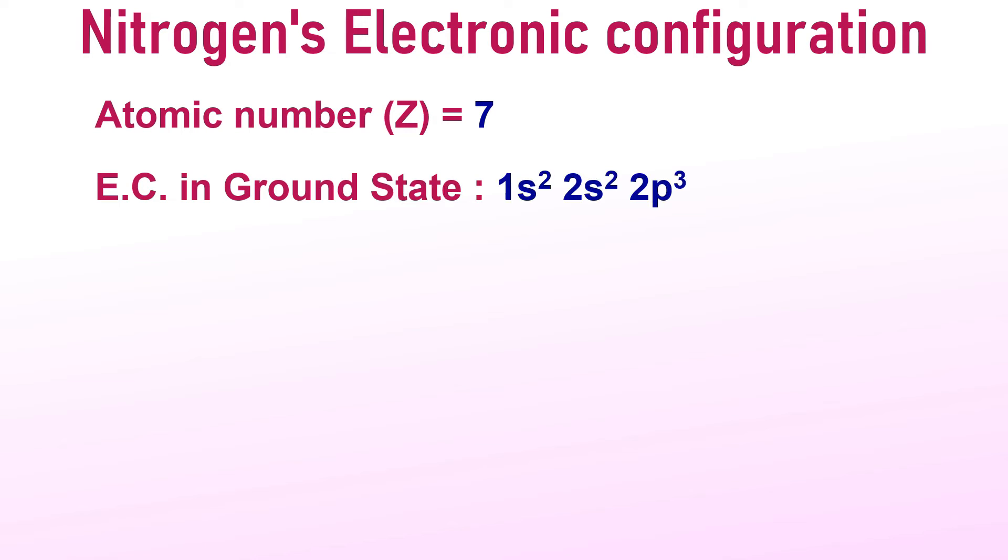Let us begin by examining the electronic configuration of a nitrogen atom. You know that its atomic number is 7 and in the ground state, its electronic configuration is 1s2, 2s2 and 2p3, which can also be expressed as 1s2, 2s2, 2px1, py1 and pz1.